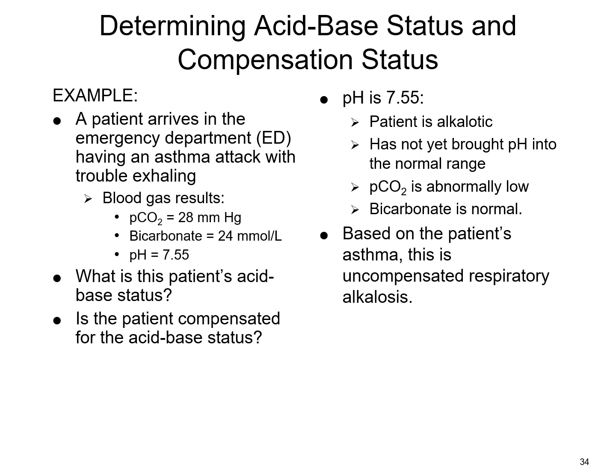For example, a patient comes to the ER with an asthma attack and trouble exhaling. Blood gas is performed and results show a pH of 7.5 (alkaline state), an abnormally low PCO2, and a normal bicarbonate. Based on this — combined with the patient's asthma causing inadequate CO2 exhalation — we determine the patient is in respiratory alkalosis and has not yet compensated.